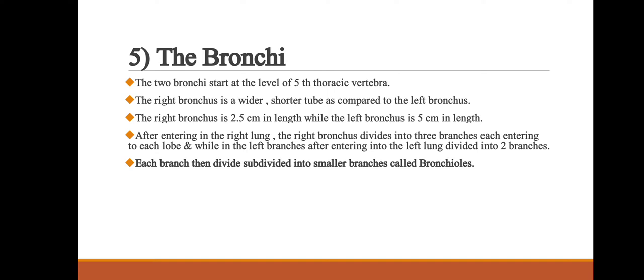The next part of the respiratory system is the bronchi. The two bronchi start at the level of the fifth thoracic vertebra. The right bronchus is wider and shorter compared to the left bronchus; the right bronchus is 2.5 cm in length while the left bronchus is 5 cm in length. After entering the right lung, the right bronchus divides into 3 branches, each entering a lobe, while in the left lung it divides into 2 branches. Each branch then divides and subdivides into smaller branches called bronchioles.